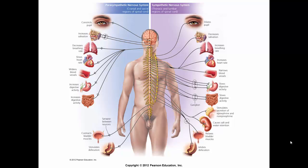This shows the different breakdowns of the parasympathetic and sympathetic nervous systems. The parasympathetic slows heart rate and widens blood vessels, whereas the sympathetic increases heart rate and narrows blood vessels. The parasympathetic increases digestive activity, while the sympathetic decreases it. So they have antagonistic effects.